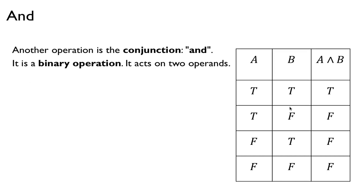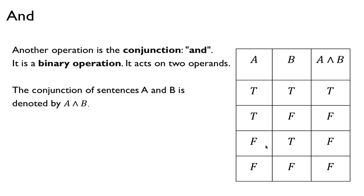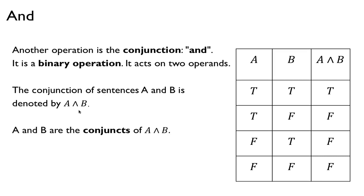Another important operation is conjunction, or the AND operator. This is a binary operation — it takes two operands A and B. A AND B is true exactly when both A and B are true; otherwise A AND B is false. This is called the conjunction of sentences A and B.